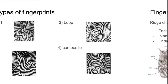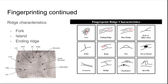The fingerprints begin to differ within their specified category using ridge characteristics. A fork occurs when a fingerprint line, which is a ridge, branches off from one and splits into two. An island is when a ridge is isolated by itself, not connected, and is much smaller than the rest, almost like a dot. An ending ridge is when, as it sounds, the ridge terminates.